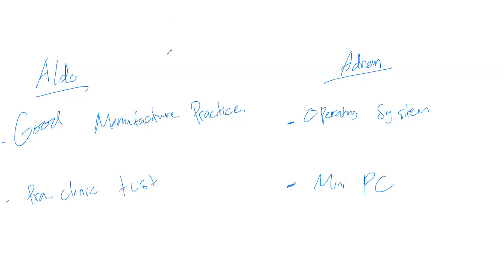Adnan, can you dive deeper on Good Manufacturing Practice? GMP covers all activities during manufacture, from raw material to product. It also includes guidance on how to use or consume the product — the guidance for the product overall. Yes, that's right.